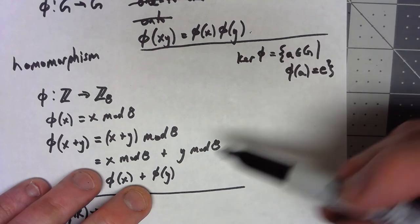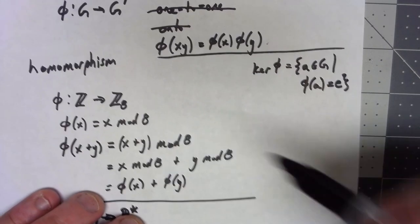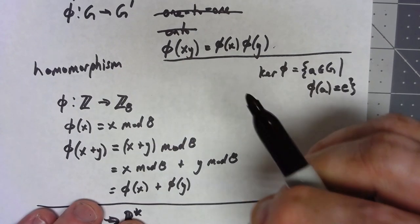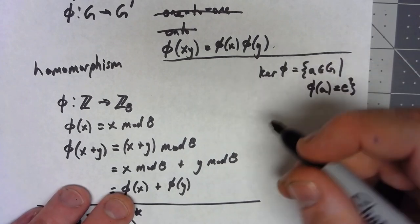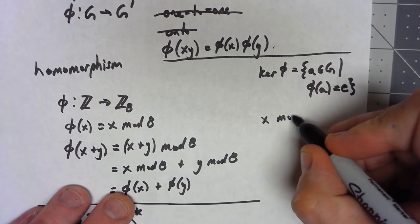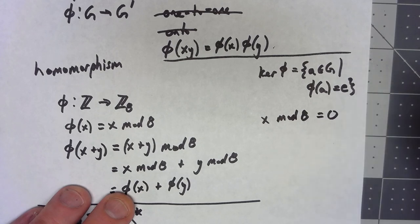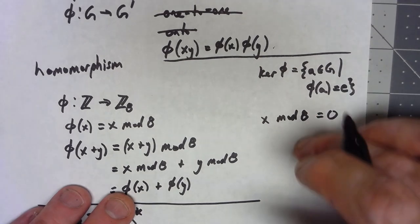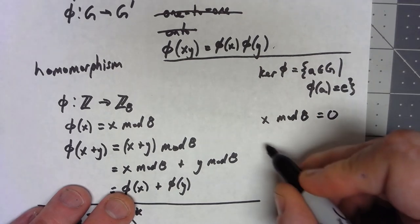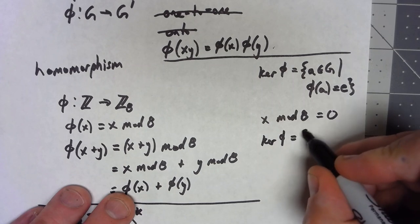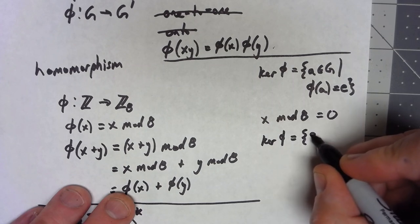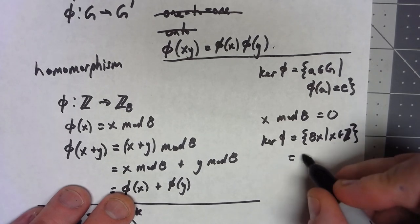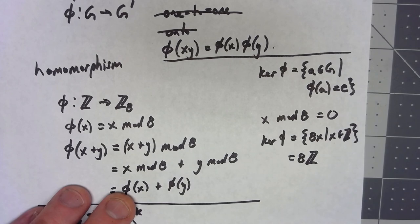Let's see how that works on all these things. So for this homomorphism from Z to Z8, we're trying to figure out what are all the things such that when I take x mod 8, I get 0. Well, with what we know about modular arithmetic, that's basically just all the multiples of 8. So the kernel of phi here is the set of all 8x such that x is an element of Z, or sometimes that just gets written as 8Z.